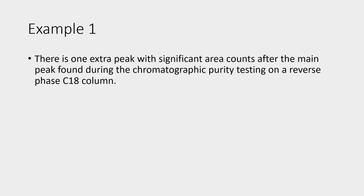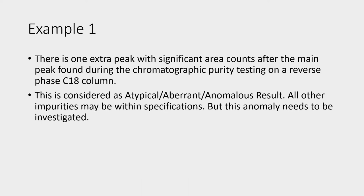Let us see this example. There is one extra peak with significant area counts after the main peak found during chromatographic purity testing on a reverse phase C18 column. This is a typical case encountered by many. This is considered as a typical aberrant, anomalous result. All other impurities may be within specifications, but this anomaly needs to be investigated. As per MHRA, this is the definition for such failures.